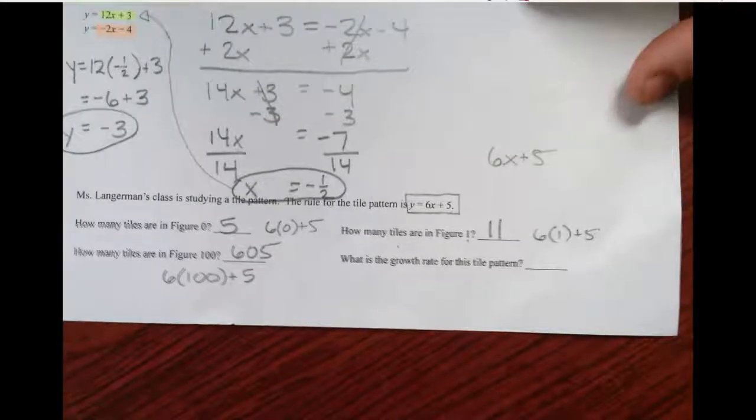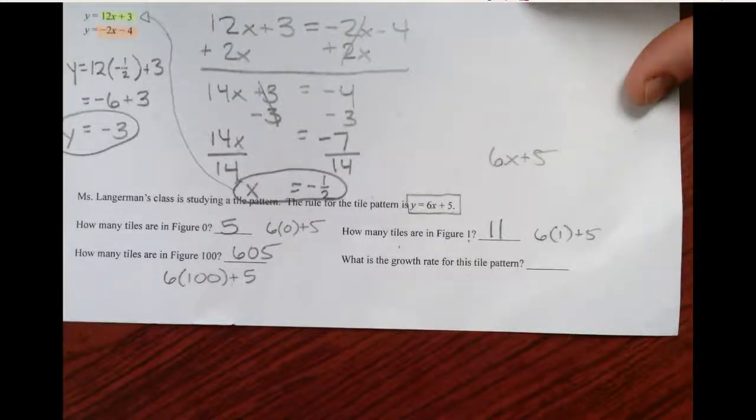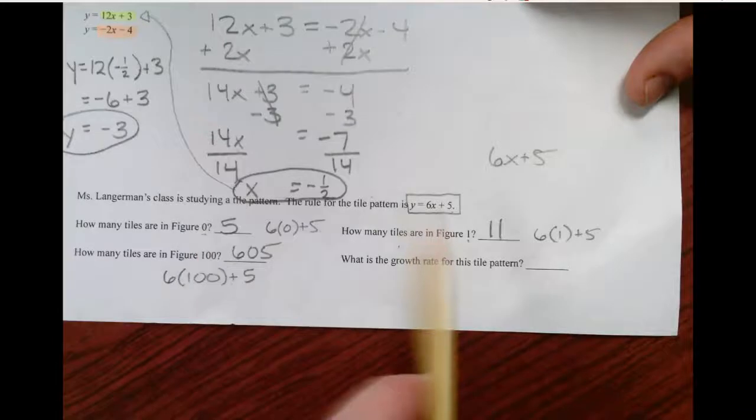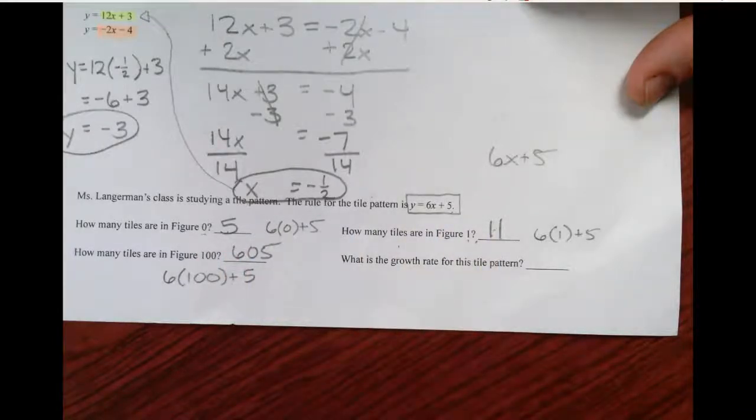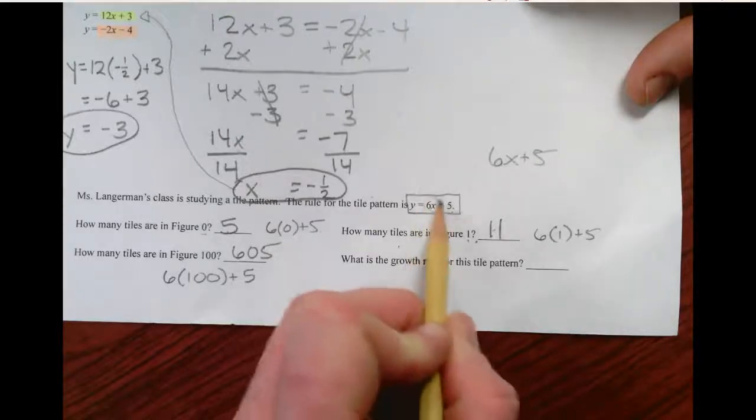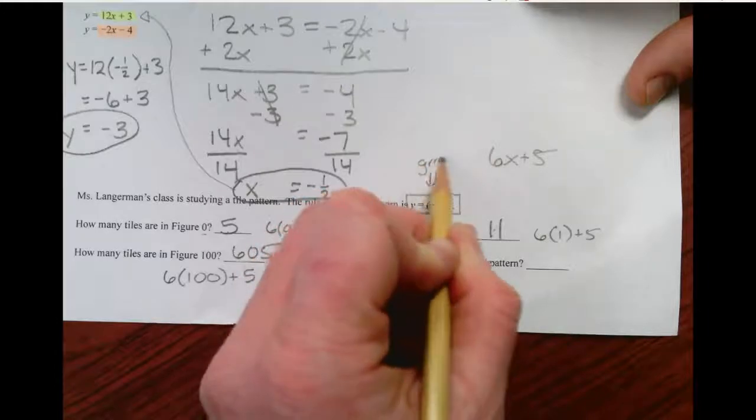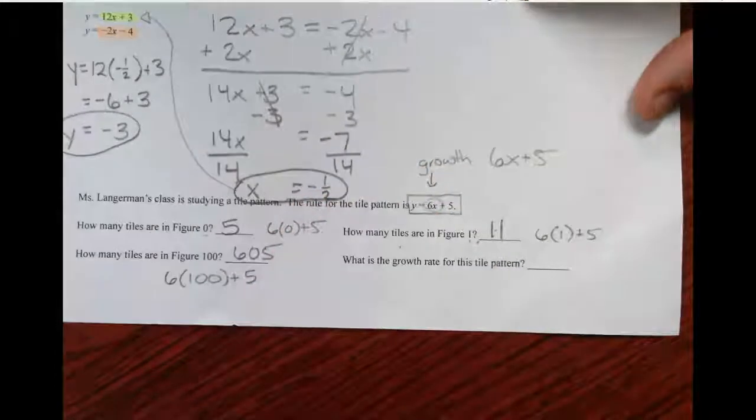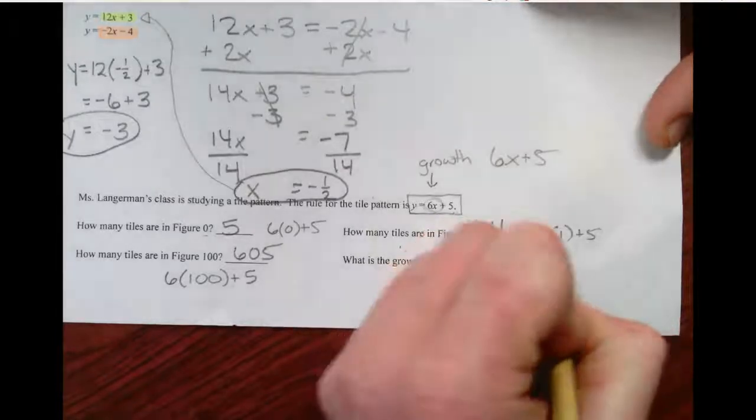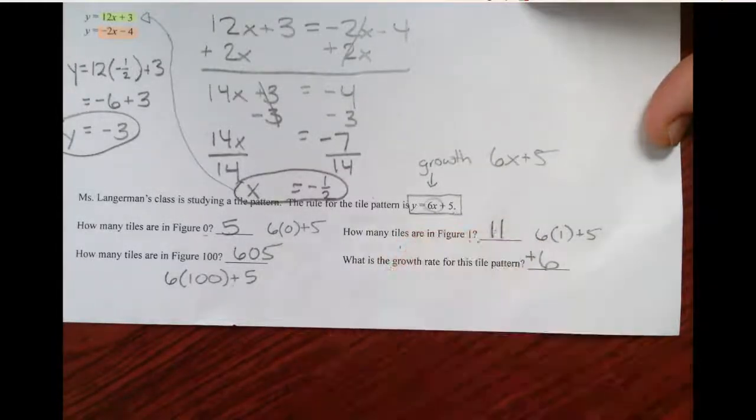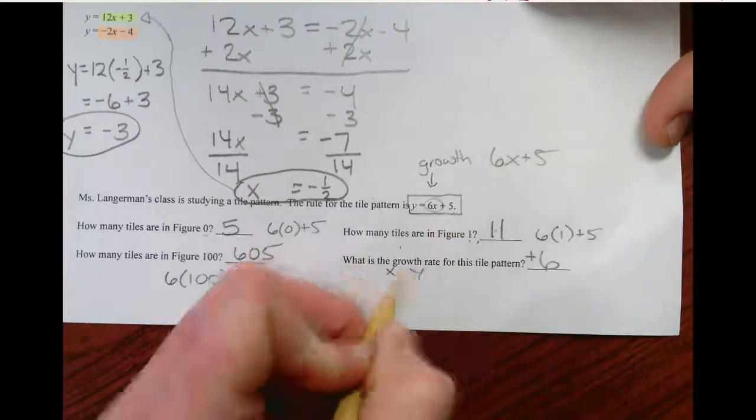What's the growth rate for the pattern? Well, from figure 0 to figure 1, we grew by 6 tiles. Figure 2 would have 6 more tiles. This is our growth rate. Slope is growth. If it's negative, the growth is negative. But our m is growth, so we're growing by 6. Every time x goes up by 1, you're going up another 6. You could even test it out by making a little table.